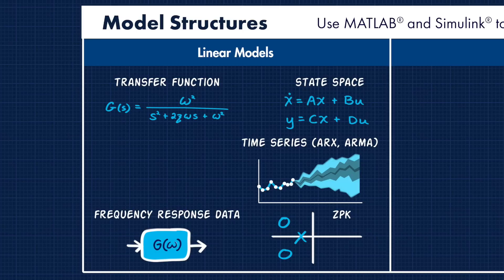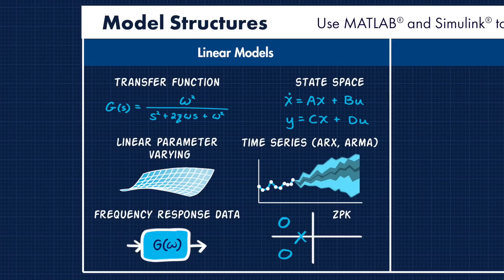If you have frequency information from your system, from something like a sine sweep, then a frequency response data model might be a good choice. And a linear parameter varying model can be used if your system dynamics vary in a way that can be captured with time-varying parameters called scheduling parameters.